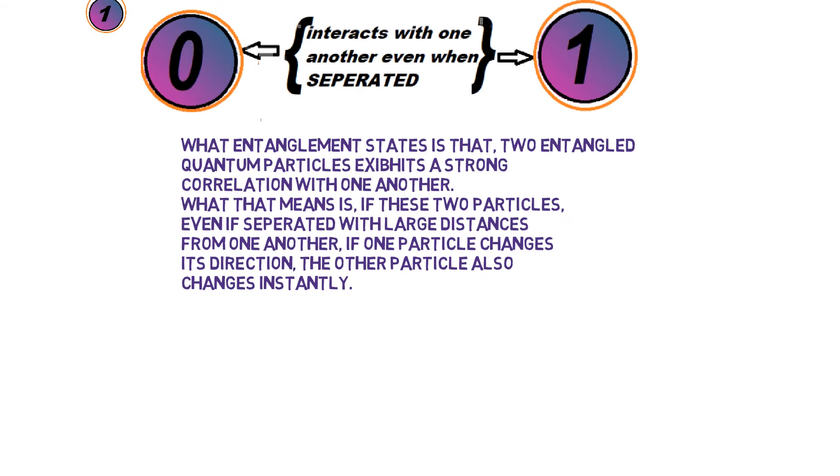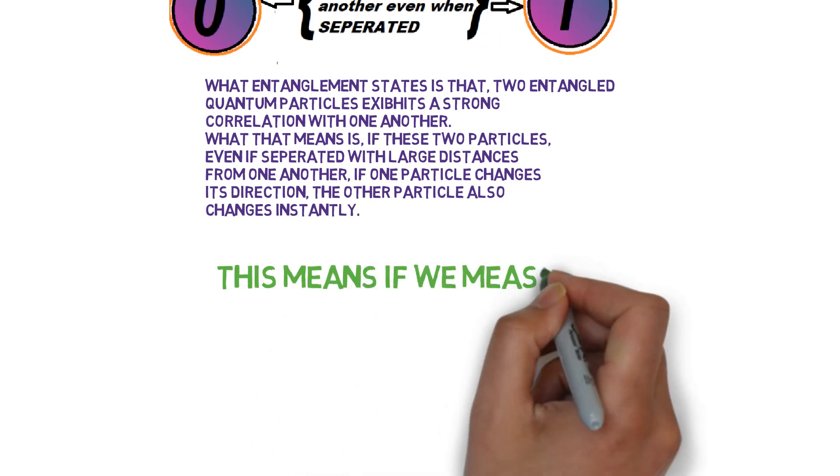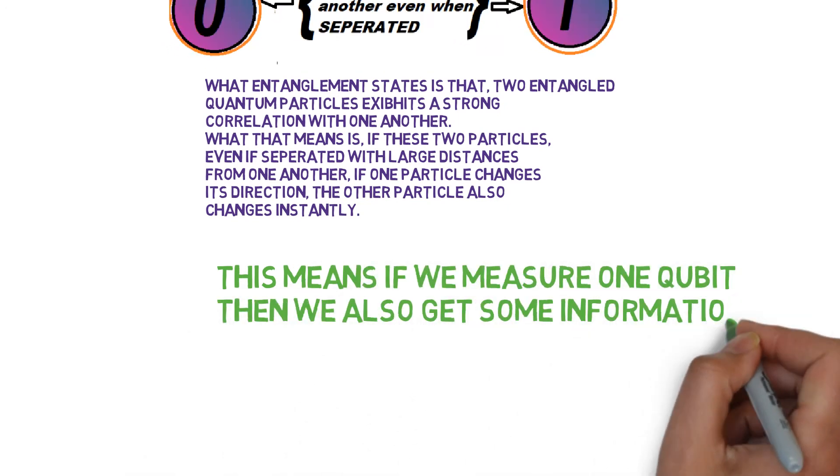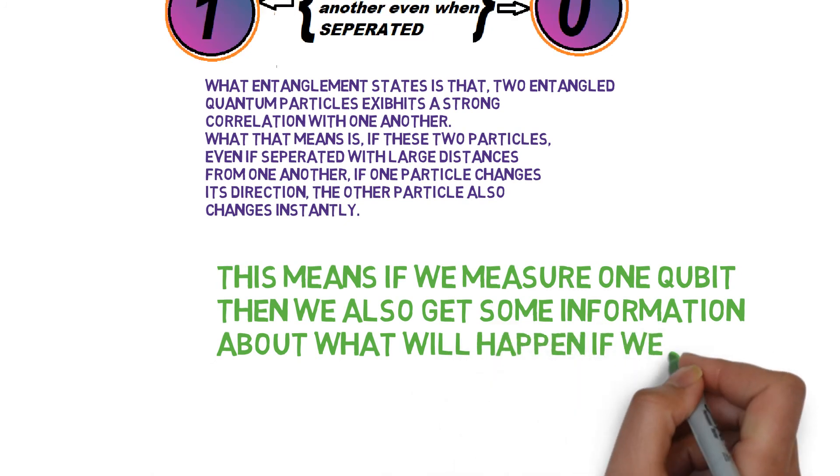This means if we measure one qubit, then we also get some information about what will happen if we measure another qubit.